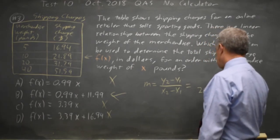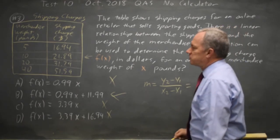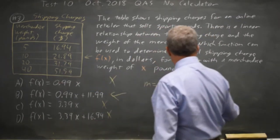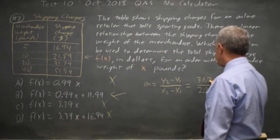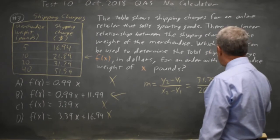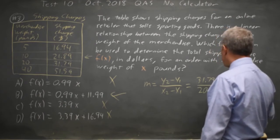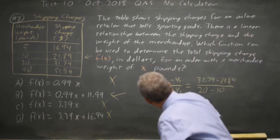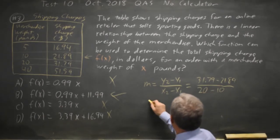20 minus 10. And my numerator is going to be 31.79 minus 21.89. And I'm going to set that up neatly so I don't mess it up.